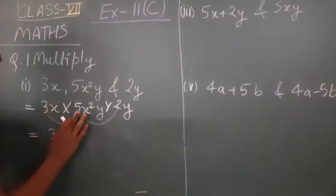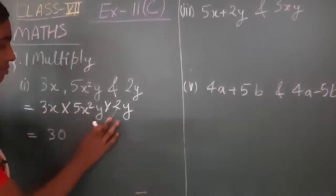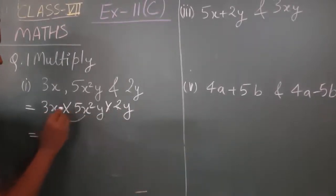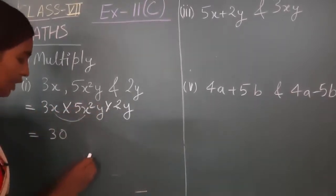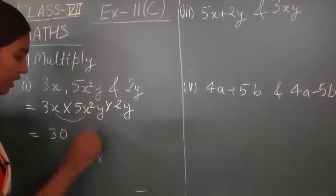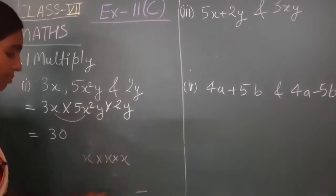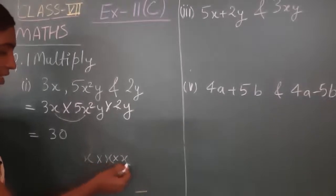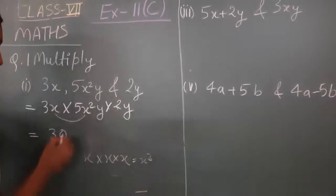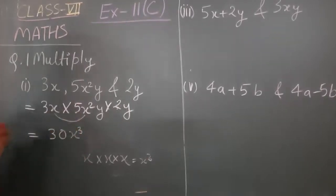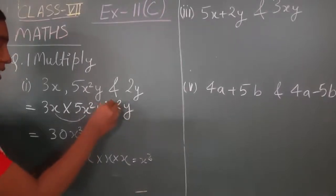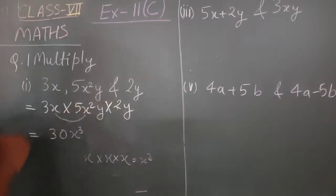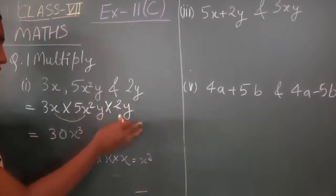Now x will multiply with x. So x into x² — x into x² means x is written 2 times, so x to the power becomes 3. Therefore x into x² equals x cube (x³). There is no more x in the third term, so we leave it as is.